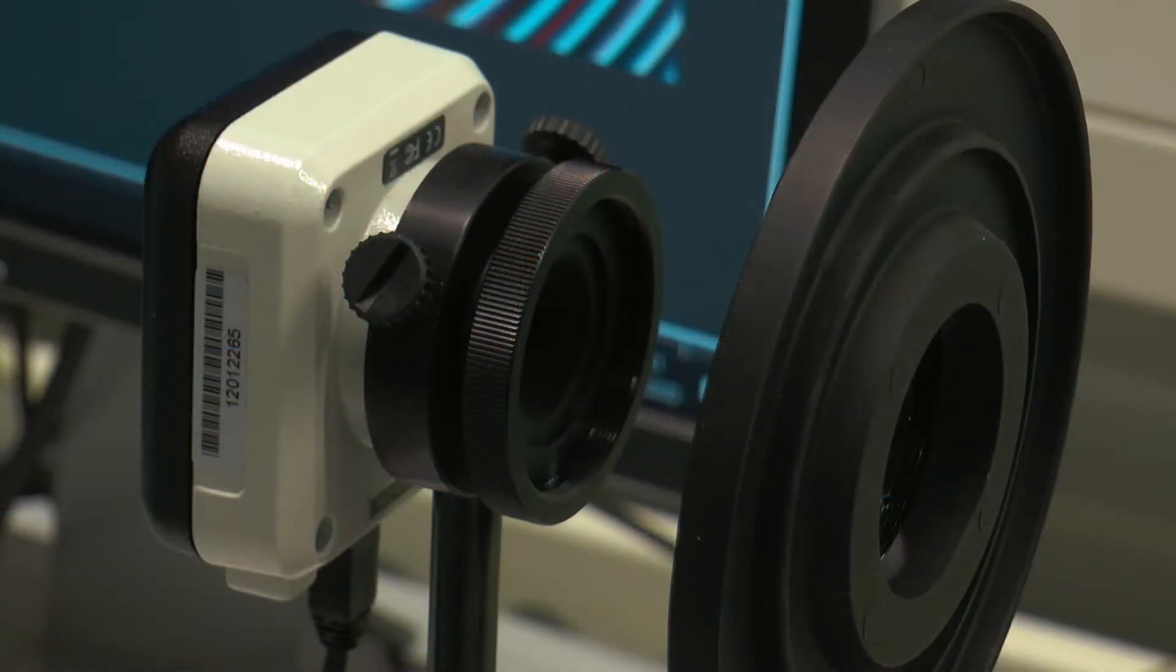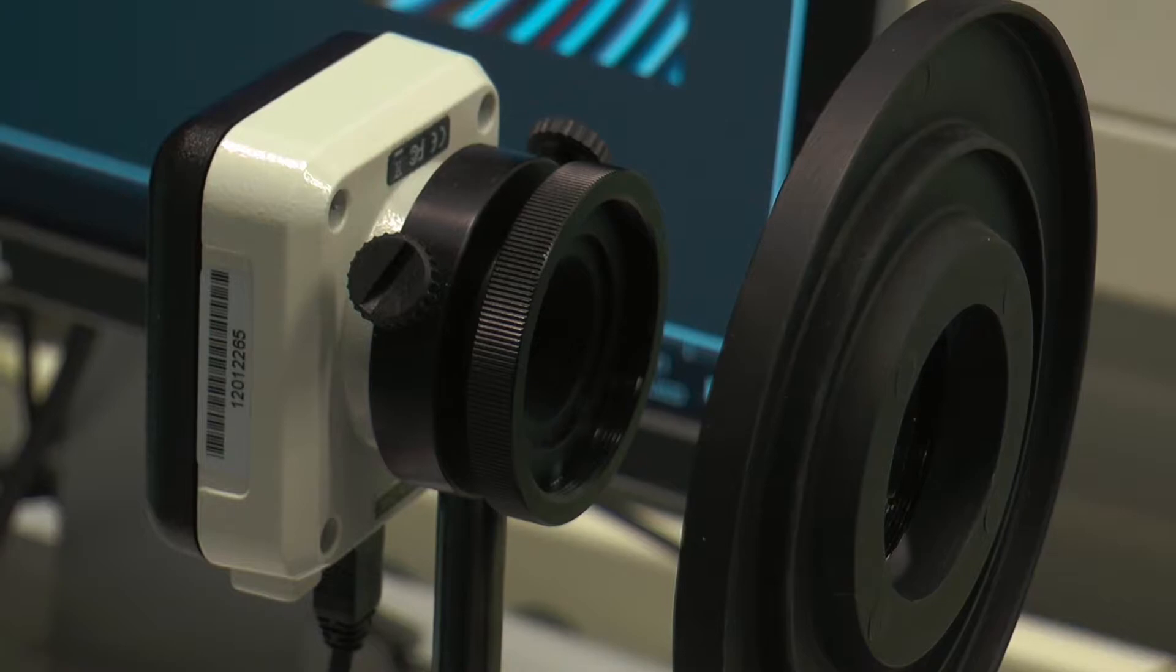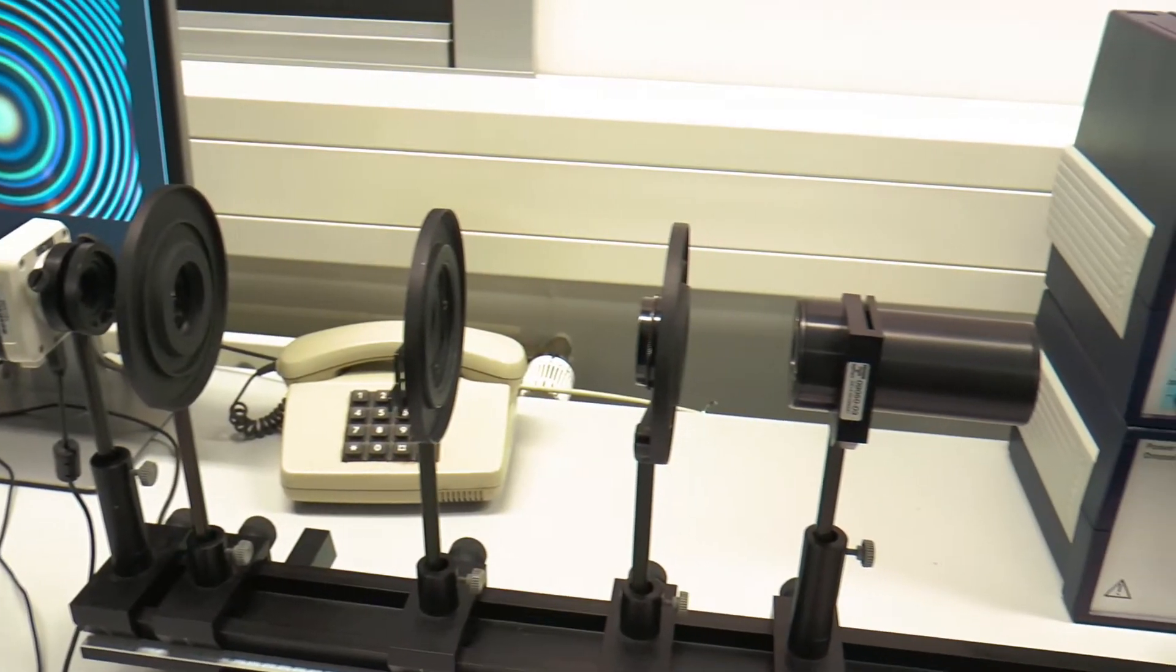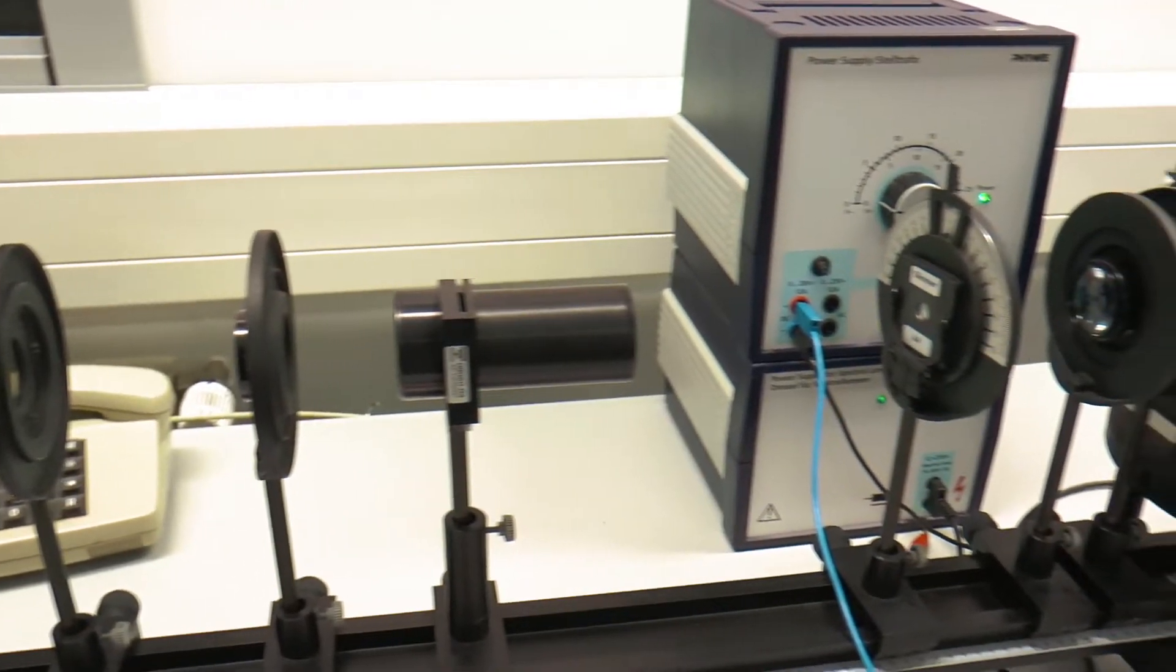The interference pattern of the interferometer is projected onto a CCD camera through a magnifying scope. The scope is built with two lenses on the left side.